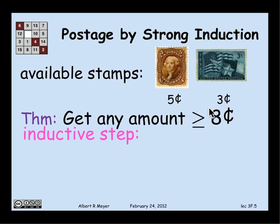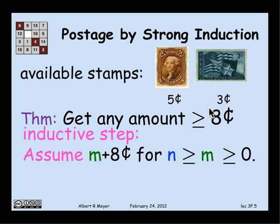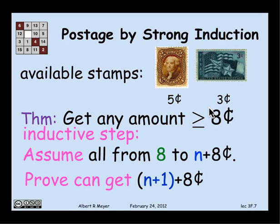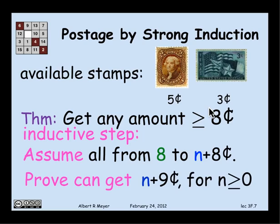For the inductive step, I'm allowed to assume that I can get n plus 8 cents for any m from n down to 0. Instead of just assuming that I can get n plus 8 cents to get n plus 1 plus 8 cents, I can assume any amount less than what I'm aiming for. So I may as well assume that I can get any amount of postage from 8 up to n plus 8 cents. And my objective, then, is to get n plus 1 plus 8 cents, namely n plus 9 cents. So I have to prove that for all n greater than or equal to 0, I can get n plus 9 cents, assuming I can get from 8 to n plus 8 cents.